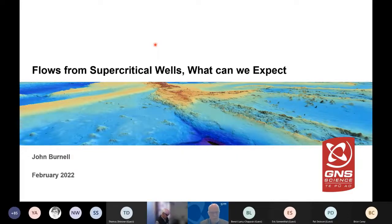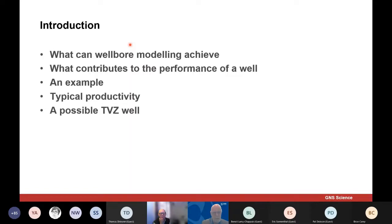Kia ora everyone, I'm John Bunnell from GNS Science. I'm going to do something a little bit different and look at some estimates of what we might be able to expect from supercritical wells. By supercritical here I mean temperatures above 374 degrees. I'm going to mostly rely on wellbore modeling for this, so I'll have a quick look at what's happening there, discuss the components that contribute to the performance of a well, look at an example, discuss some typical productivity for wells, and then look in more detail at a potential well in the Taupo Volcanic Zone in New Zealand.